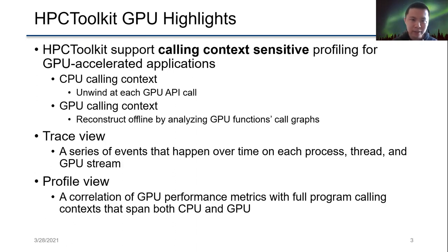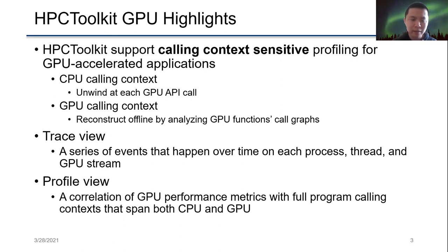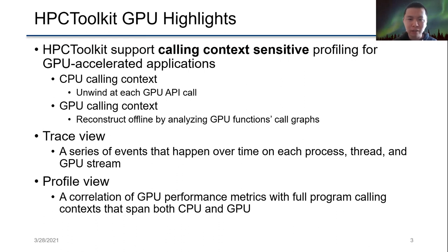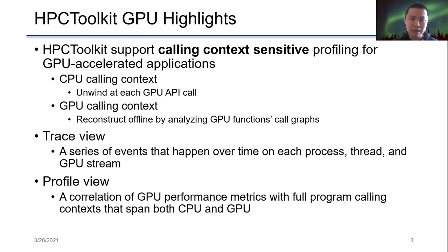As John mentioned, HPCToolkit is a tool that supports calling-context-sensitive profiling for GPU-accelerated applications. On the CPU side, we unwind call stacks, and for GPU APIs, we unwind at each GPU API call. For GPU calling contexts, we don't unwind at runtime since we don't have an API and we don't instrument GPU binaries. Instead, we reconstruct the calling context offline by analyzing GPU function call graphs.